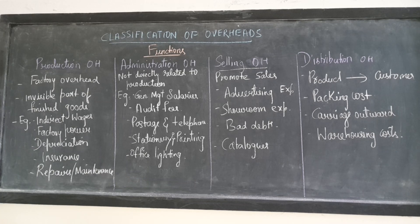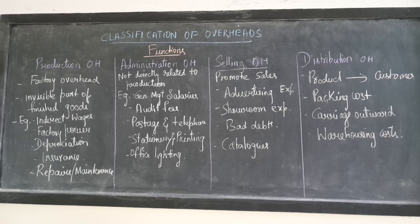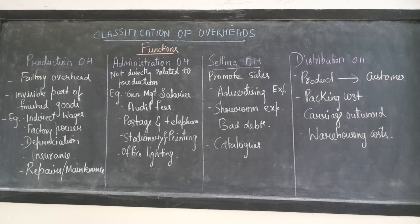Production overhead is nothing but factory overhead. This production overhead is considered as the invisible part of finished goods. Once the product is finished, some indirect inputs like fuel, lubricants, and grease used by machines become the invisible part. Examples of production overhead are indirect wages, factory power, depreciation, insurance, and repairs and maintenance.